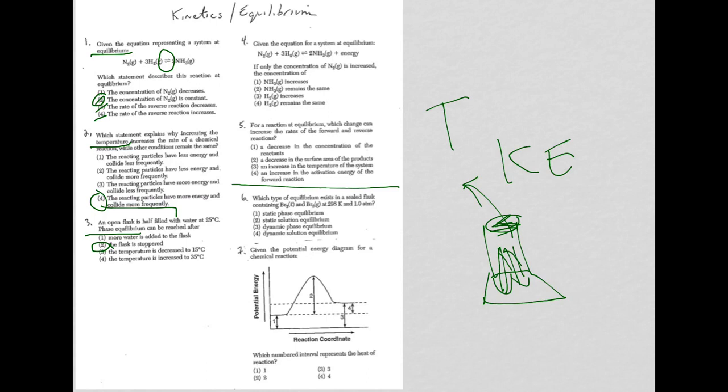For question 4, system at equilibrium again. I'm told that. Here's my double arrow. And now they're saying, if only the concentration of N2 is increased. Well, this is what's known as a Le Chatelier's question. So when you stress a system that's in equilibrium out, in this case with adding some N2, the equilibrium will shift to relieve that stress.